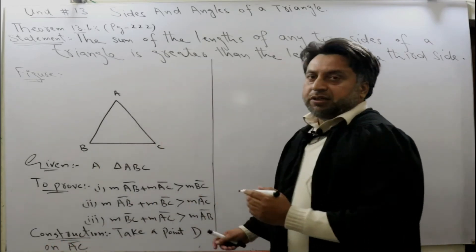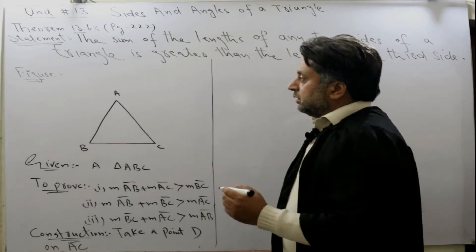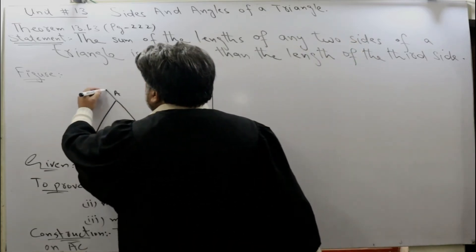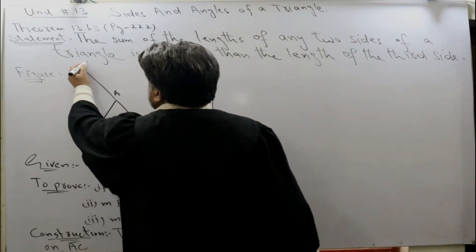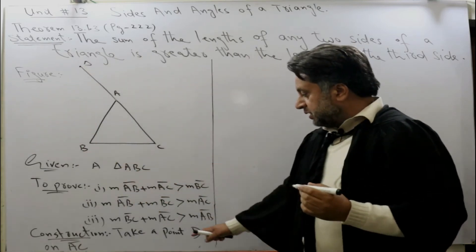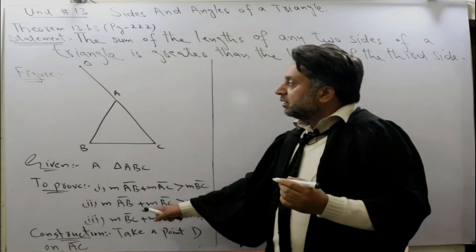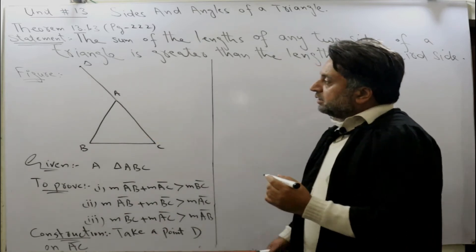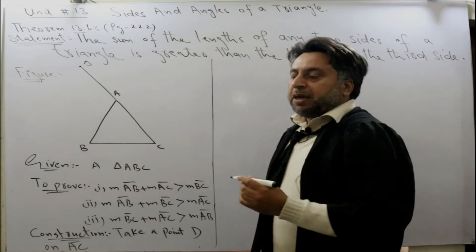Construction: Take a point D on CA such that AD is congruent to AB.